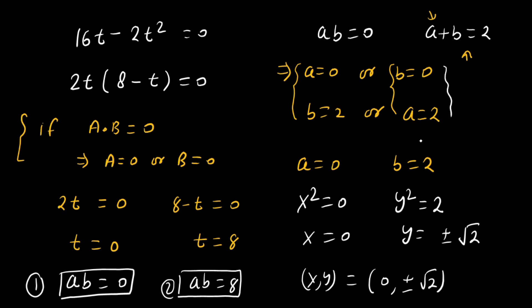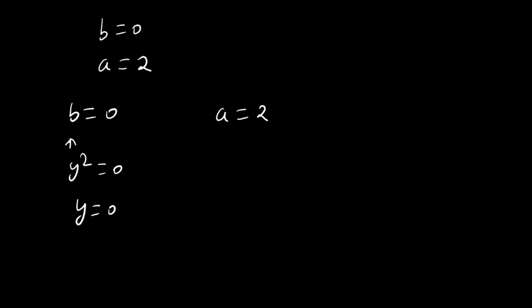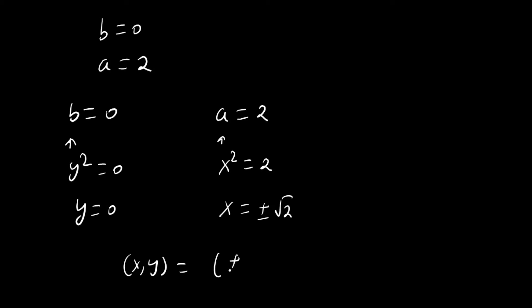Now solving the second sub-case: if b = 0 then a = 2. Since b = y², y² = 0 so y = 0. Since a = x², x² = 2 so x = ±√2. Our solution is (x, y) = (±√2, 0).